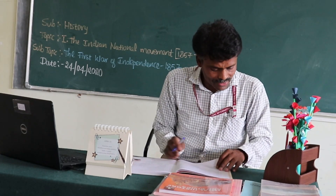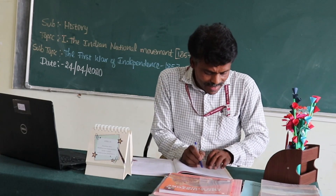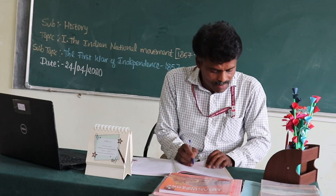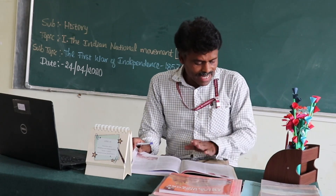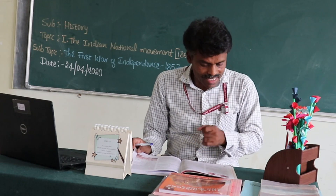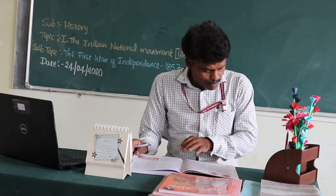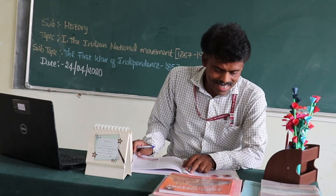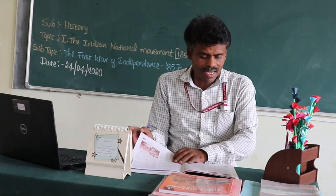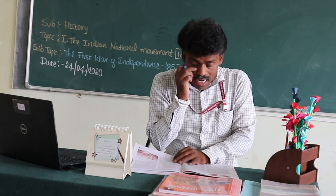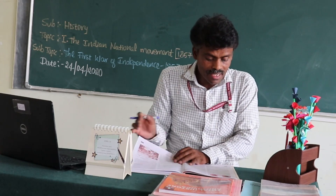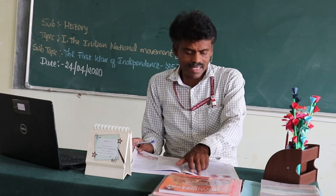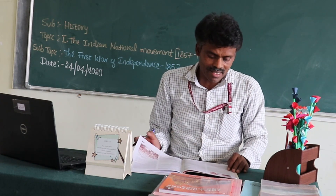The seventeenth question: Mention any three measures which point to the policy of social discrimination followed by the British in India. Same page number 12, extreme right side. Find the heading 'Policy of Racial Discrimination.' Mark that full first paragraph — starting with 'The British' and ending with 'the masses.' That is the complete answer for question seventeen.